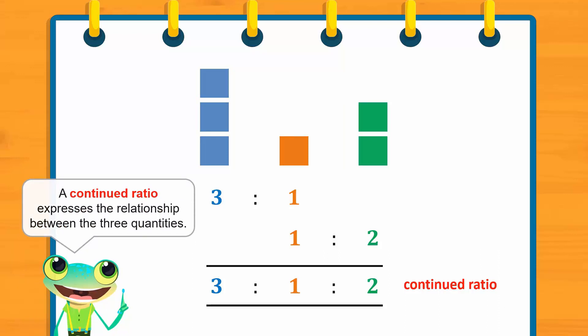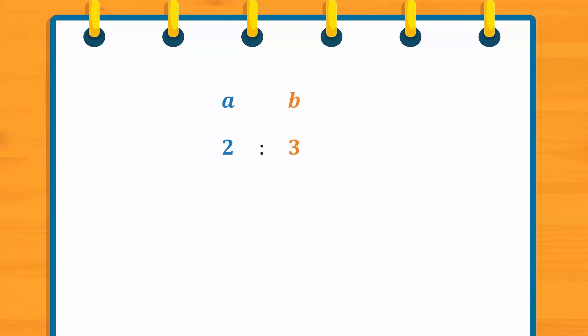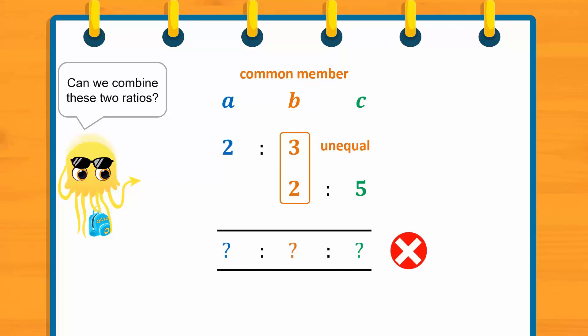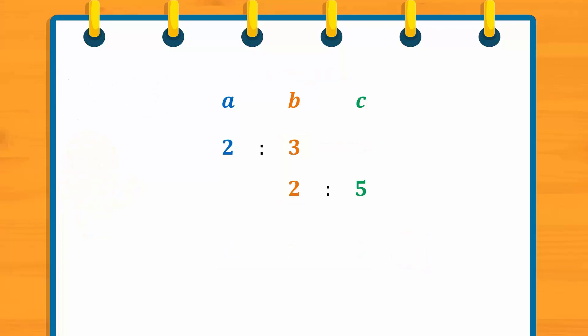Let's try another example. Given these two ratios — A to B is equal to 2 to 3, and B to C is equal to 2 to 5 — can we still combine them? In this case, B is the common member of the two ratios. However, observe that the numbers corresponding to the common member are unequal, so we cannot combine the two ratios yet. We need to make these equal.